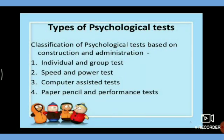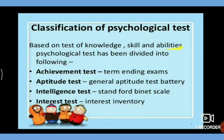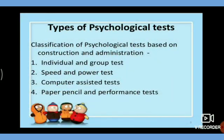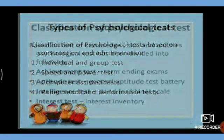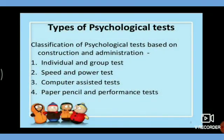Types of psychological tests: There are two main types based on construction and administration, and another classification based on the skill, knowledge, and abilities of the person. Based on construction and administration, there are four types: individual and group tests, speed and power tests, computer-assisted tests, and paper, pencil and performance tests.